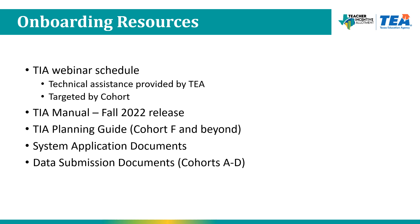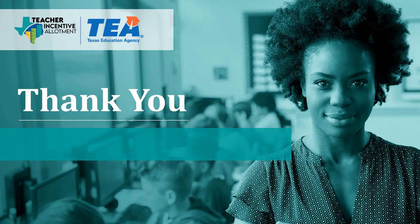Here is a summary of resources to help you onboard as a new TIA lead. First, the TIA webinar schedule provides targeted assistance by cohort in a series of webinars throughout the school year, with descriptions and Zoom registration links. We also have a TIA manual scheduled for release in fall 2022, a comprehensive guide to all TIA policies, procedures, and stages of system development. A TIA planning guide is available for Cohort F and beyond. Please study your system application documents if your district has already applied, or the posted application documents on our website if not. We also recommend reviewing data submission documents or data validation reports if your district is in Cohorts A through D. Thank you for taking the time to view this webinar — the TIA team looks forward to supporting you and your district.